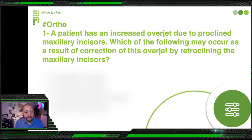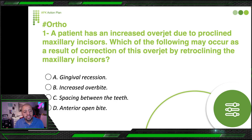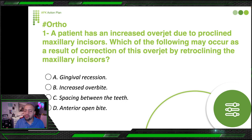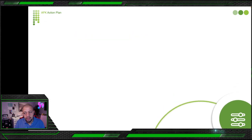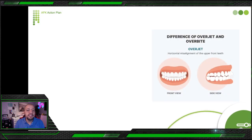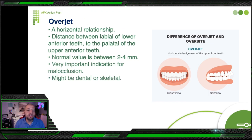The options are: recession, increased overbite, spacing between the teeth, and anterior open bite. If you understand the four terms — overjet, overbite, proclined, retroclined — it will be super easy to answer the question. So first, let's speak about overjet.